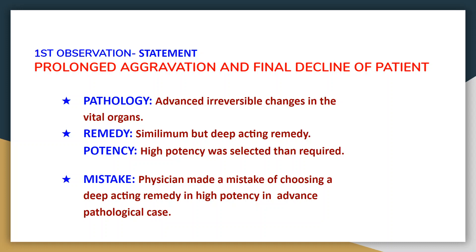Let us consider what is meant by advanced pathological cases. The observation is prolonged aggravation and final decline of patient. In which situation may you get this type of aggravation? When pathology involves advanced irreversible changes in vital organs — for example, malignancy in liver or lungs. In such cases, if you give a deep-acting remedy, what will be the situation?